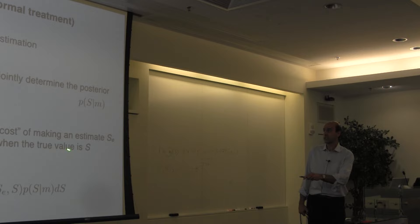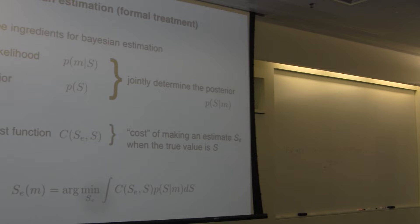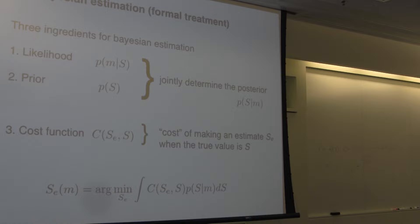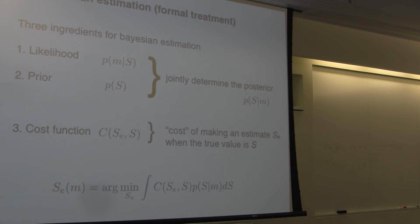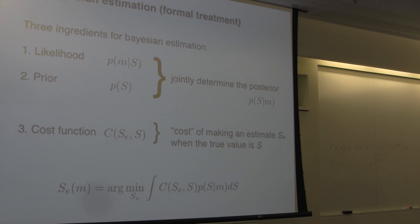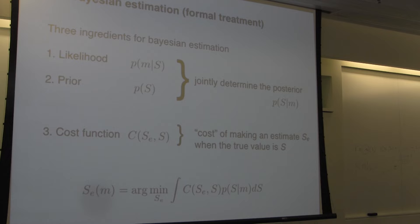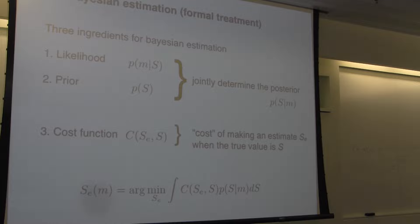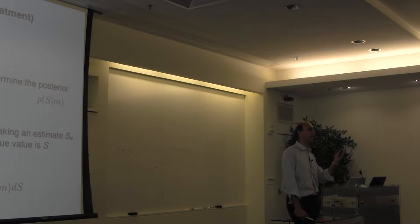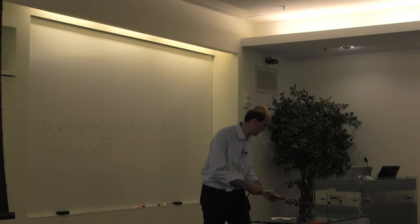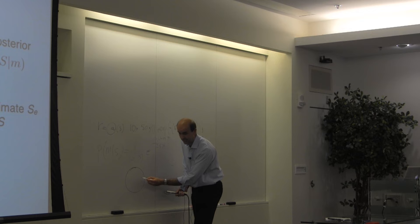So the cost function that the rat takes into account is not just the maximum probability. Let's say the posterior tells the rat there's a 51% chance the left side has sucrose and 49% chance of shock on the right. With 51% and 49%, if I'm the rat I might say I'm happy to take that risk and go for the sucrose avoiding the shock. The cost function allows you to adjust — if you want to jump over a river and going a little bit short is really worse than going a little bit far, you may want to bias yourself to jump even farther.